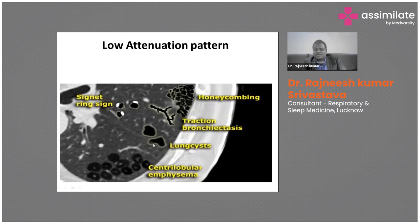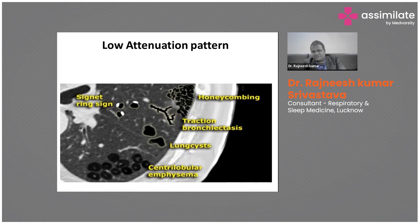Low attenuation patterns on CT include honeycombing, traction bronchiectasis, lung cysts, or emphysema. Two key findings we must know for diagnosing ILD are honeycombing and traction bronchiectasis. Honeycombing refers to small cysts located subpleurally — in the periphery of the lung — stacked in multiple layers of two to three. These multi-layered stacked peripheral cysts resemble a honeycomb, which is why the term is used.